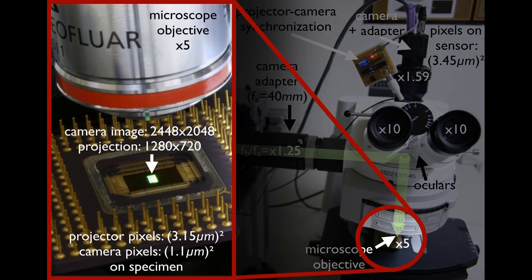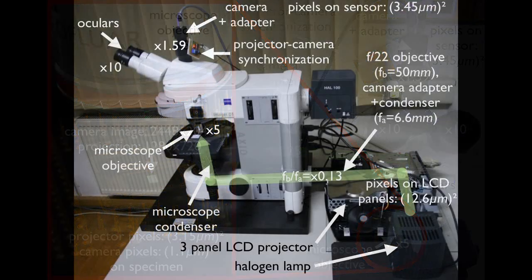For reflected illumination, projector, camera, and ocular rays pass through the same objective. They remain registered, no matter if the specimen is moved, the microscope is refocused, or its magnification is changed.